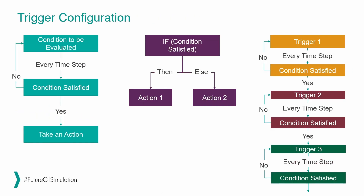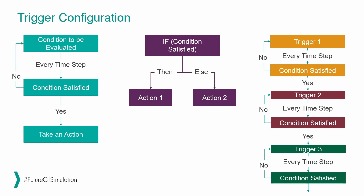This slide shows the different ways to configure a trigger. In the first option you define the condition to be evaluated; the simulator will evaluate this condition every time step until the condition is satisfied, at which point it will automatically take the action you previously defined. In the second case, once the condition is satisfied the simulator takes action number one, and if the condition is not satisfied it takes an alternative action number two.